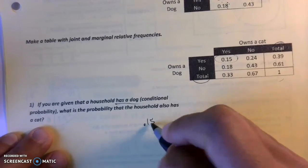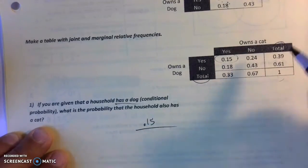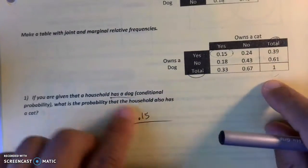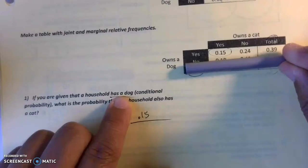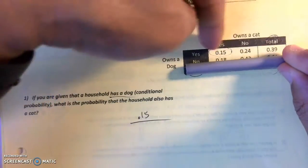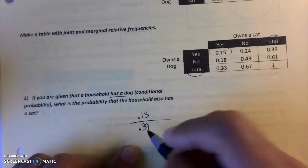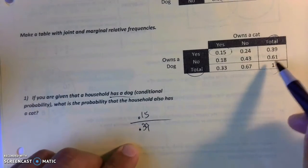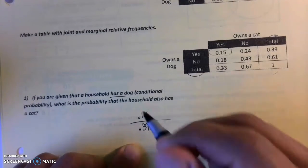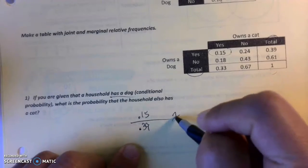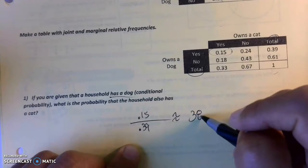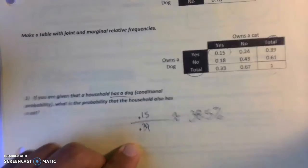It's going to be 0.15 divided by—now, you're in this condition where we already have a dog, so it's in this realm here. The total is 0.39. You don't take the total of all 100 people that were polled. This is approximately 38.5%. Just divide the two fractions.